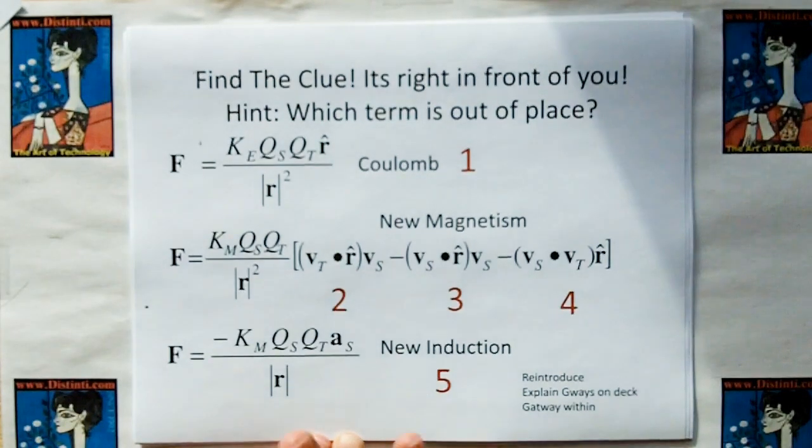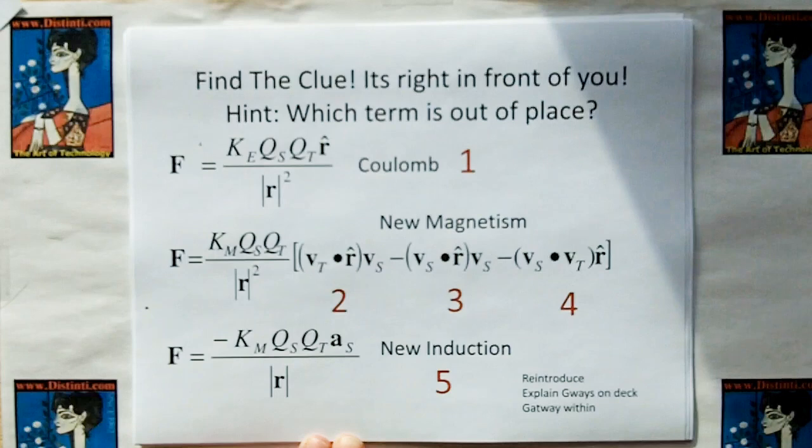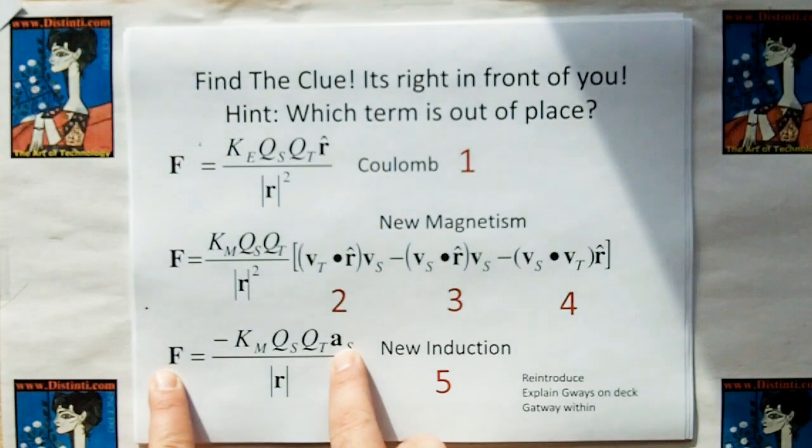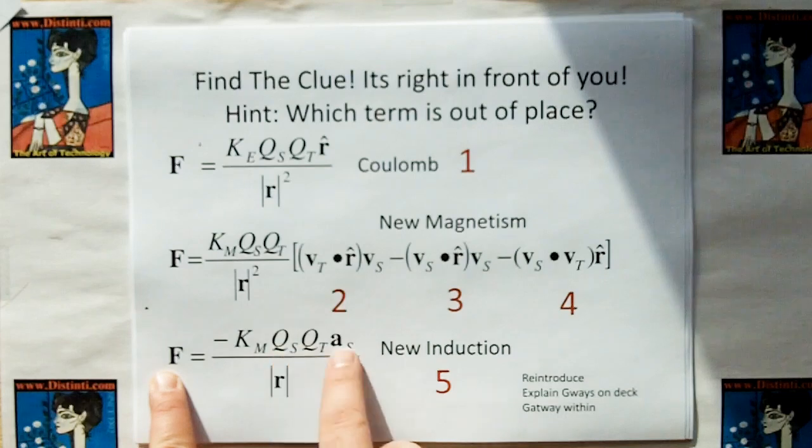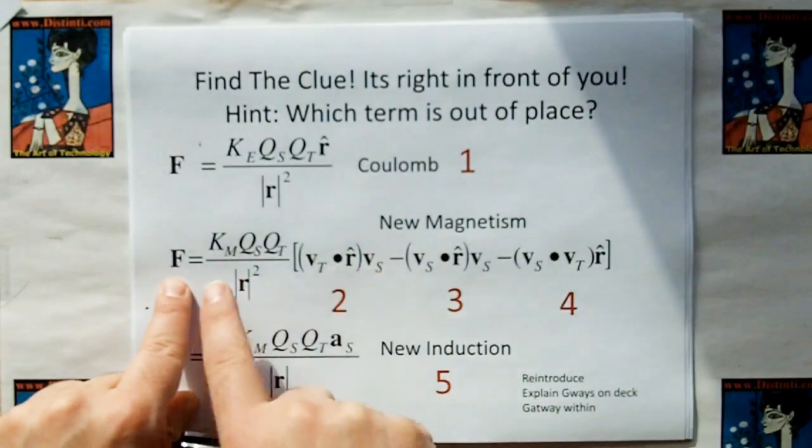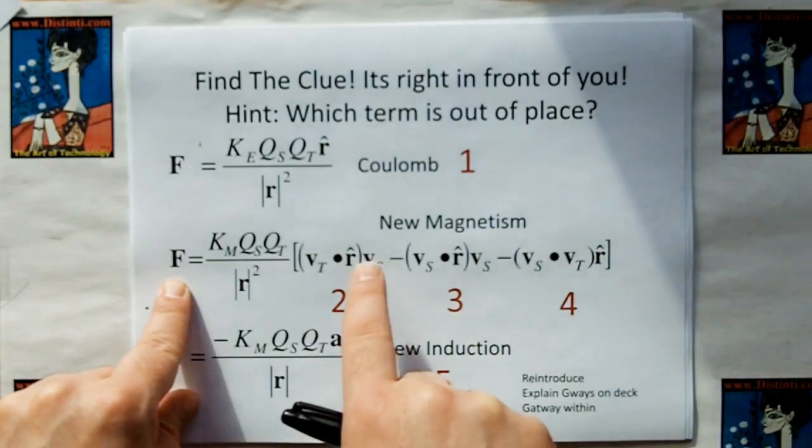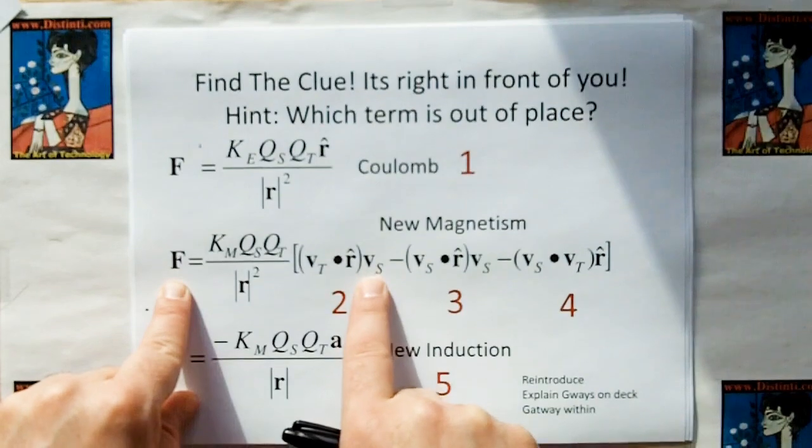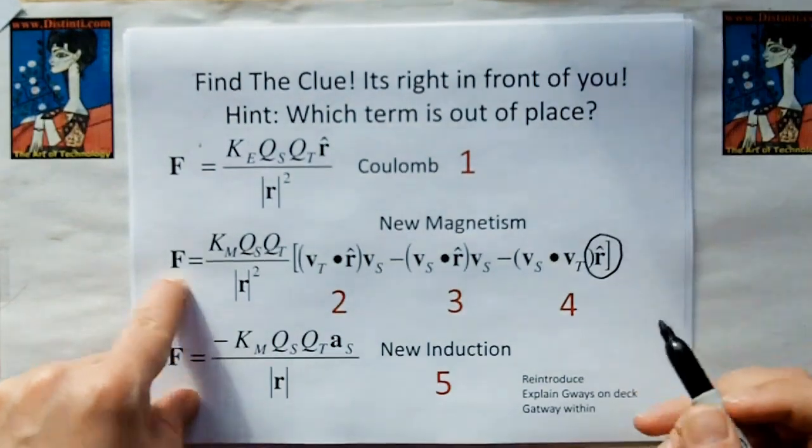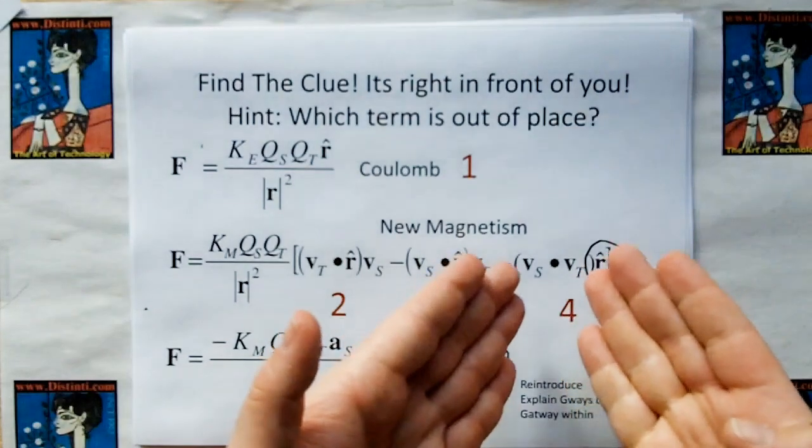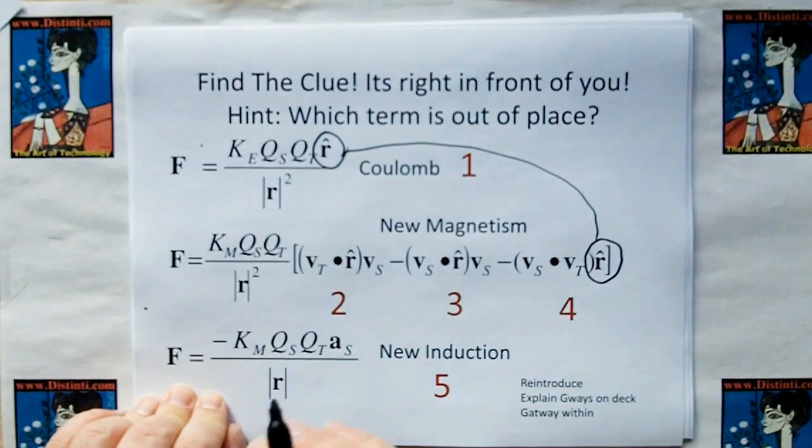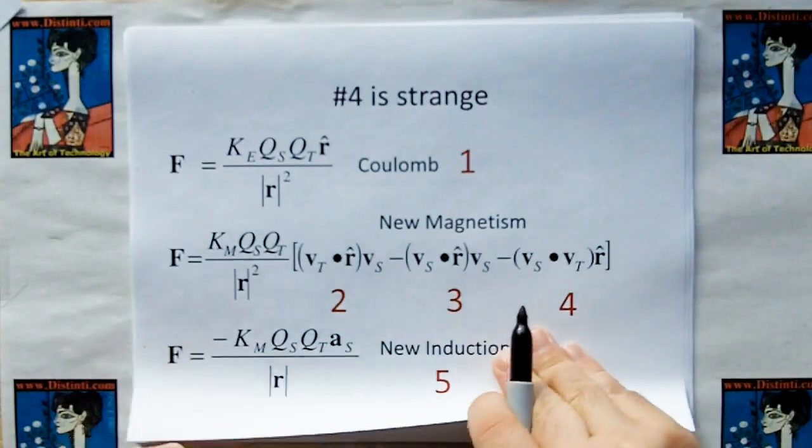And we have the gateways on deck like we need to get rid of force. We need to break these up into cause and effect which are essentially emission and coupling. So these all need to be split. And there's other gateways. But within these models there's a gateway, a clue. Now if you want to try to figure it out for yourself, put your video on pause right now because I'm about to explain what the gateway is. If you notice this model here, the direction of the force is proportional to the direction of the acceleration of the source charge. So the behavior of the source charge gives us the direction of the force applied on the target charge.